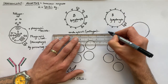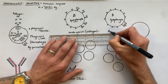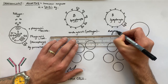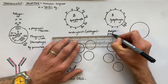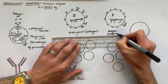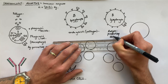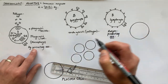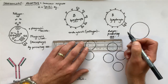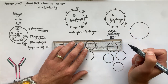So the B lymphocyte is also called an antigen-presenting cell. Both the phagocytic cell and the B lymphocyte are professional antigen-presenting cells.